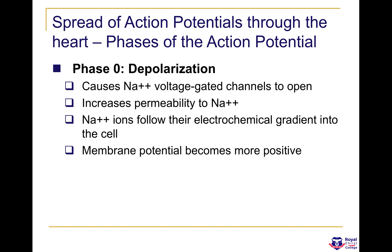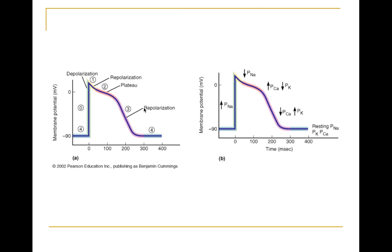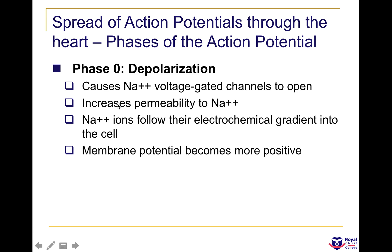In the heart there are five phases: phase zero, one, two, three, and four. In cardiovascular physiology you always start with phase zero. Phase zero is the depolarization phase — the resting membrane potential becomes less negative and more positive. This occurs because sodium voltage-gated channels open, increasing the permeability of sodium ions into the cardiac cell, causing the action potential to rise and become more positive.